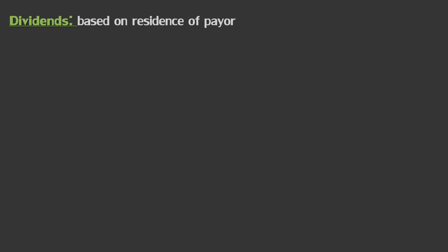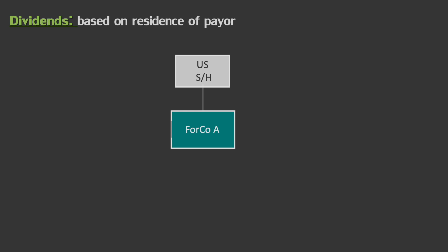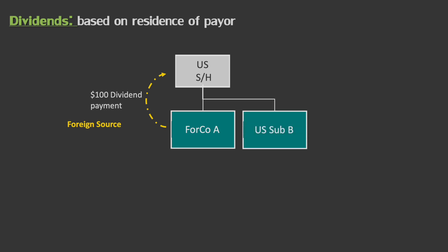Let's walk through a simple example. I have a U.S. shareholder that owns 100% of foreign company A organized in Belgium. Foreign company A pays a dividend of $100 to the U.S. shareholder — that dividend is foreign source. Now let's assume the U.S. shareholder also owns 100% of U.S. sub B, and U.S. sub B pays a $50 dividend during the year. The dividend in this case would be U.S. source.